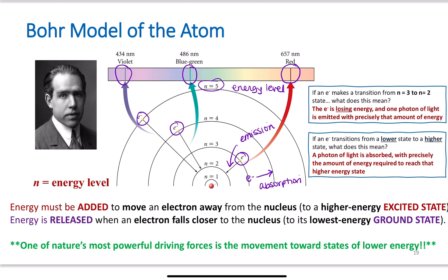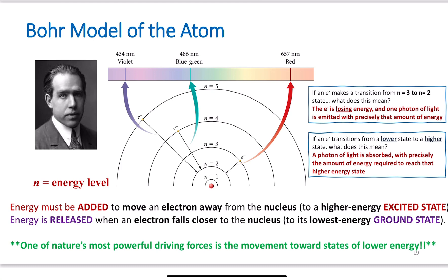If an electron makes a transition from the n equals 3 to the n equals 2 state, it means the electron is losing energy and one photon of light is emitted with precisely that amount of energy. There is an energy difference between these two levels — the electron travels down and releases a photon, represented as h-nu, since the energy of a photon equals h-nu. That photon has a characteristic wavelength which correlates to a characteristic color. If an electron transitions from a lower state to a higher state, a photon of light is absorbed with precisely the energy required to reach that higher energy state.